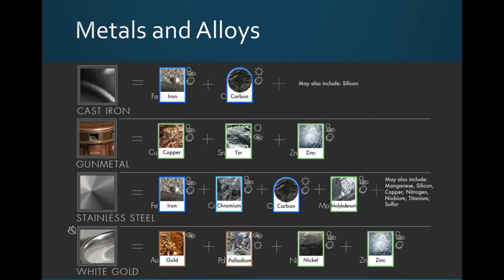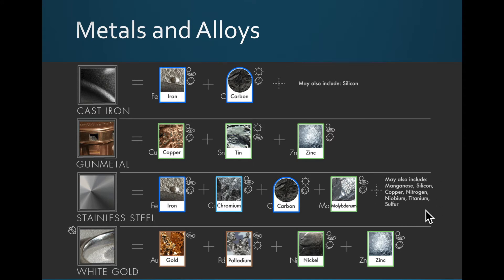Here are some common alloy examples. Cast iron is made of iron and carbon, sometimes with silicon. Stainless steel is iron, chromium, carbon, and molybdenum, sometimes with other items. White gold is actually gold, palladium, nickel, and zinc — so it's not pure gold. These are just a few examples, but there are many more.